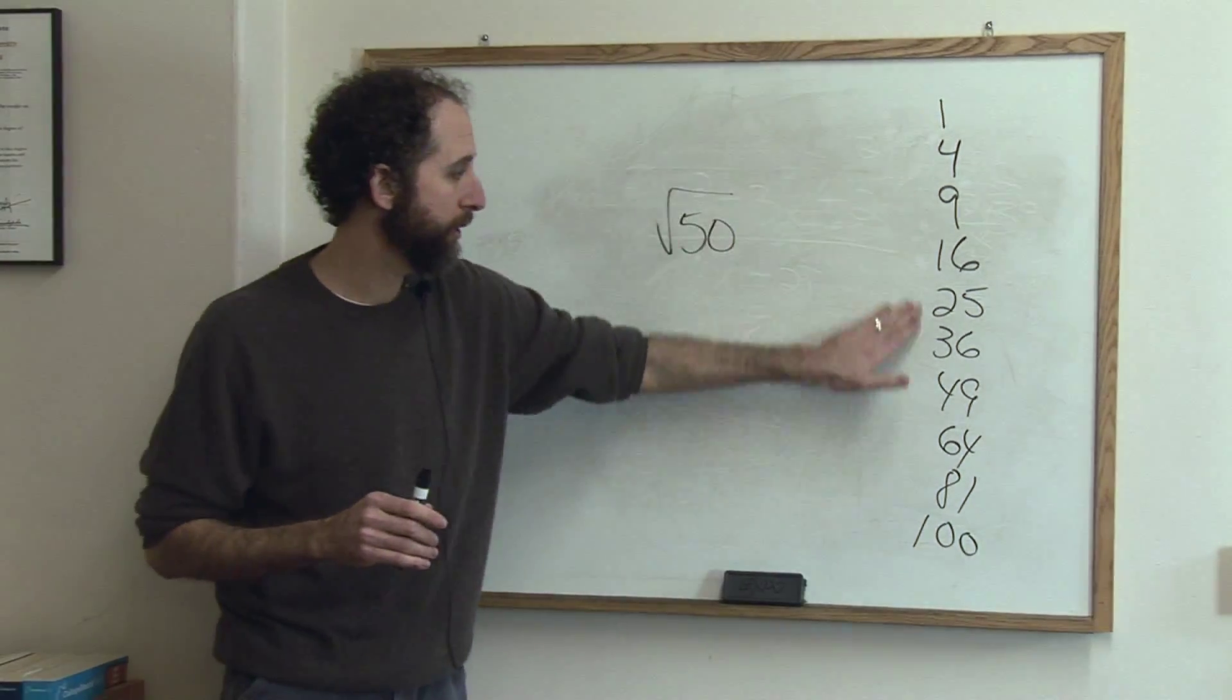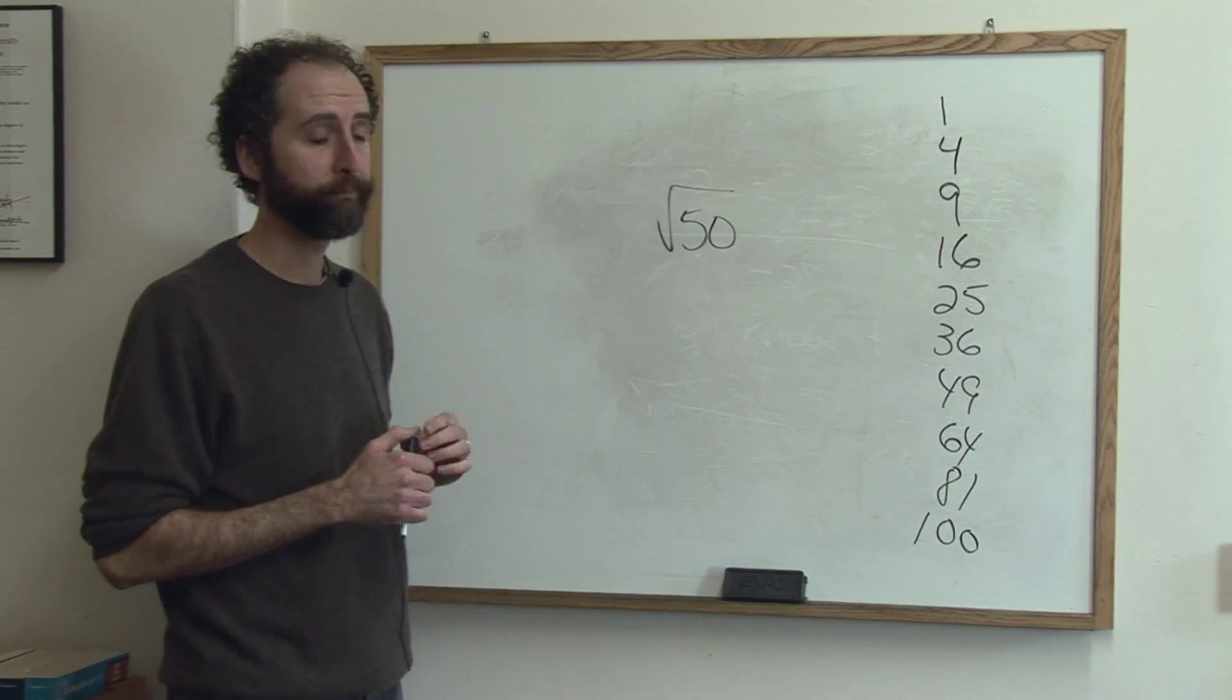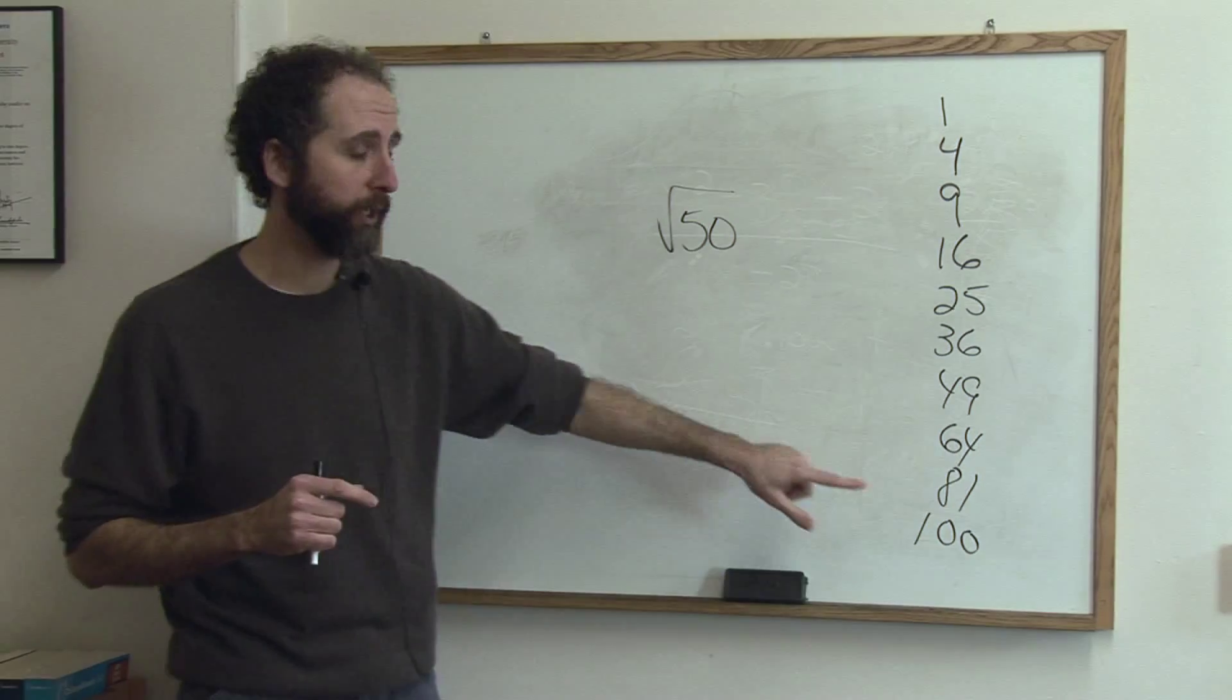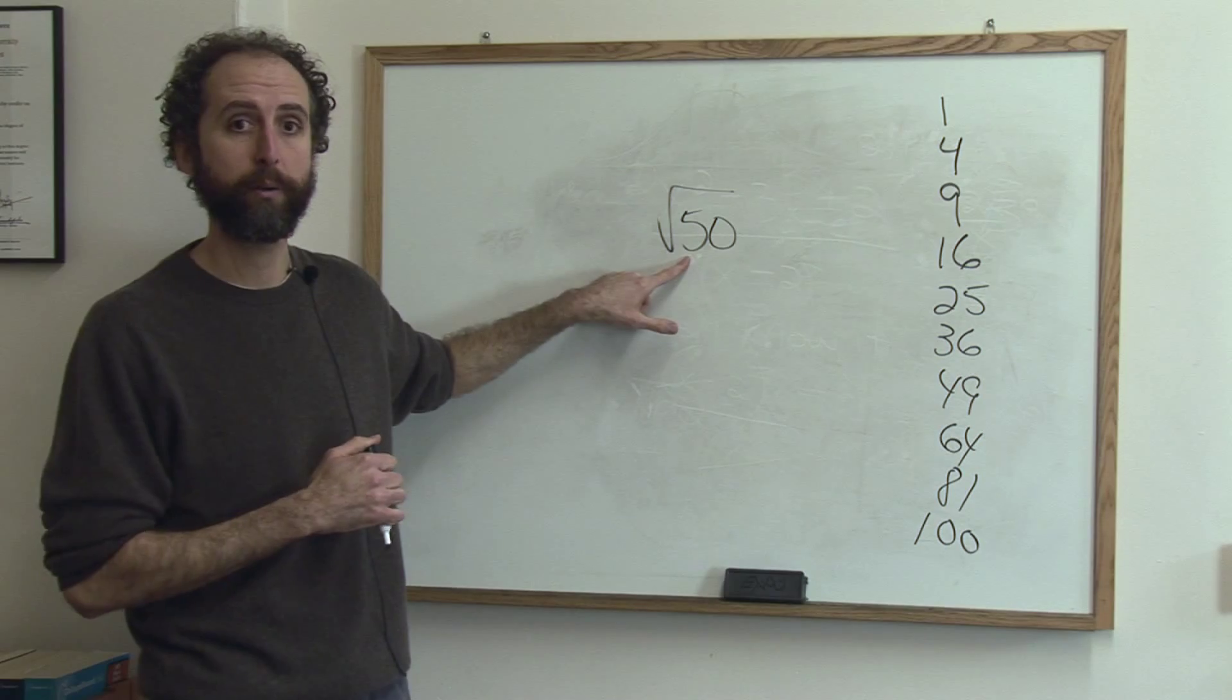The reason you want to put those on the side of your paper is because that's what we're going to use and you need to know which one. So, when you've got a root that you want to simplify, you take a look at the list and you look at the biggest number that might go into this number, that might divide into that number.